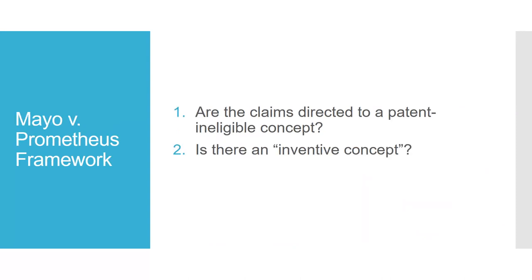To determine patent eligibility, the court used the two-part examination process employed in Mayo v. Prometheus. The court first asks: are the claims directed to a patent-ineligible concept, and if so, what else is in the claim? They consider all the elements in the claim individually and then as a whole to determine if there are transformative qualities to it.